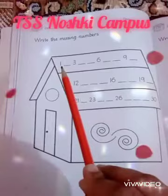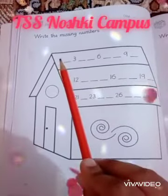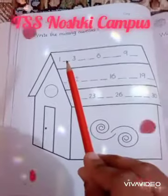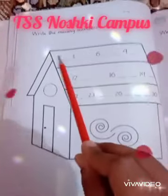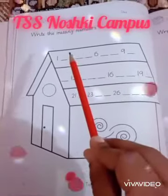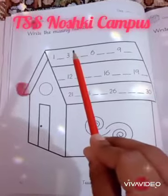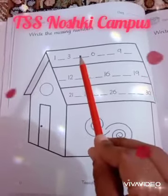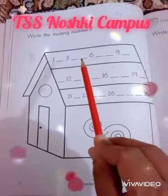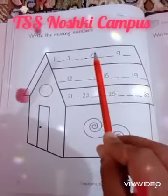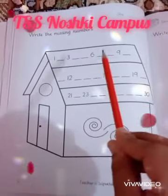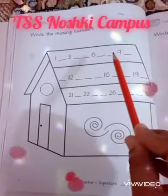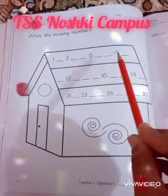Which number is this? This is number one. After one, which number will come? Two. After two, which number will come? Three. After three, four. After four, which number will come? Five. After five, which number will come? Six. After six, which number will come? Seven.